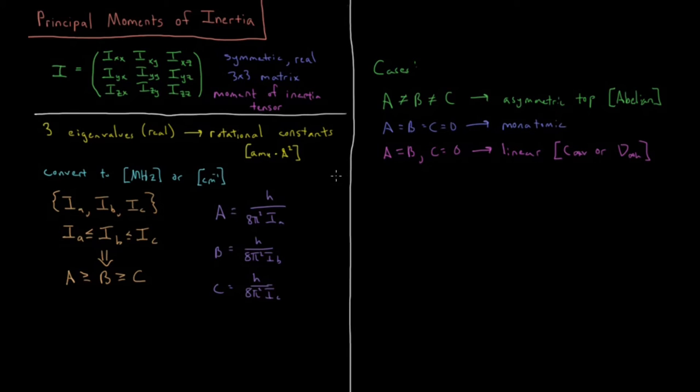Other cases we can have: we can have A equals B is not equal to C, or A is not equal to B which is equal to C, and none of them are equal to zero.